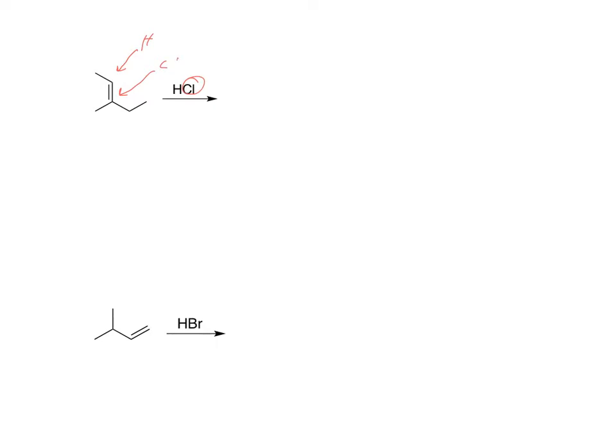And the way you determine the substitution is you want to look at how many things each carbon's bound to. So this carbon's bound to one carbon, this one's bound to two, so that makes this carbon here a secondary. This carbon right here is bound to one other carbon, two, three, so that makes it a tertiary.